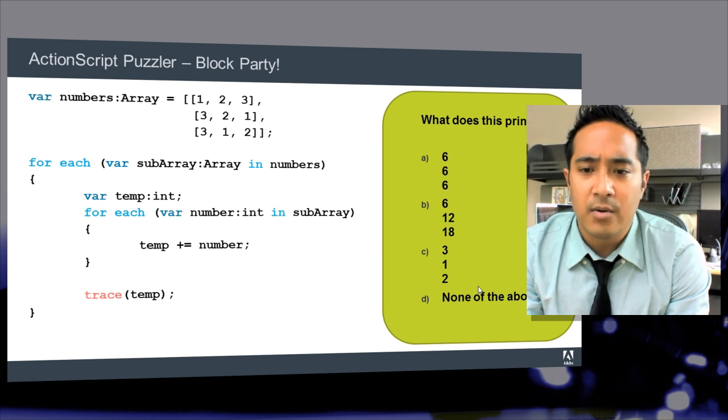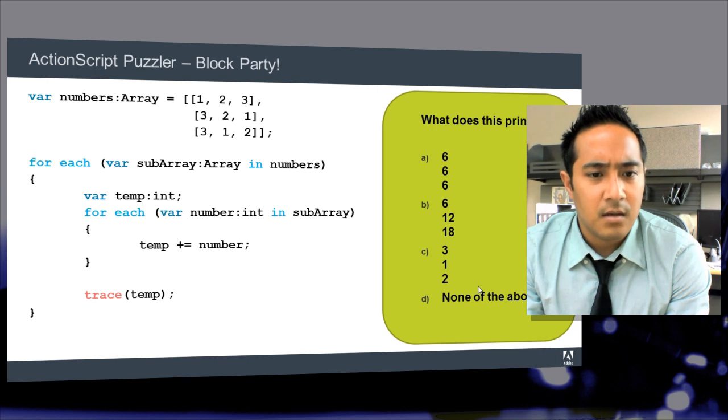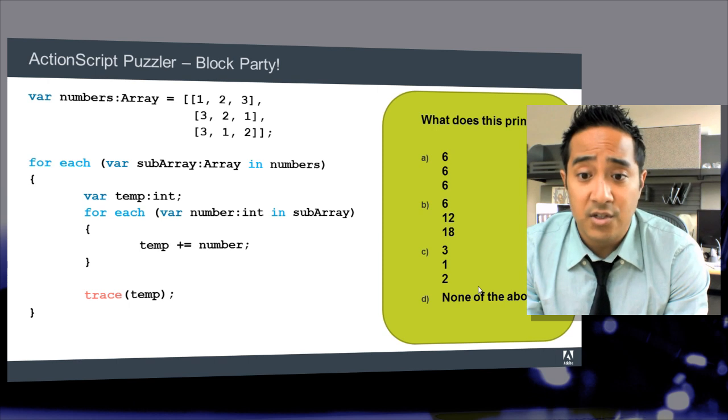Then we start a for each loop where we iterate through all of the subarrays within numbers. Then we declare a variable temp, which is an integer. It isn't initialized, but should be auto-initialized for us to a default value of 0.